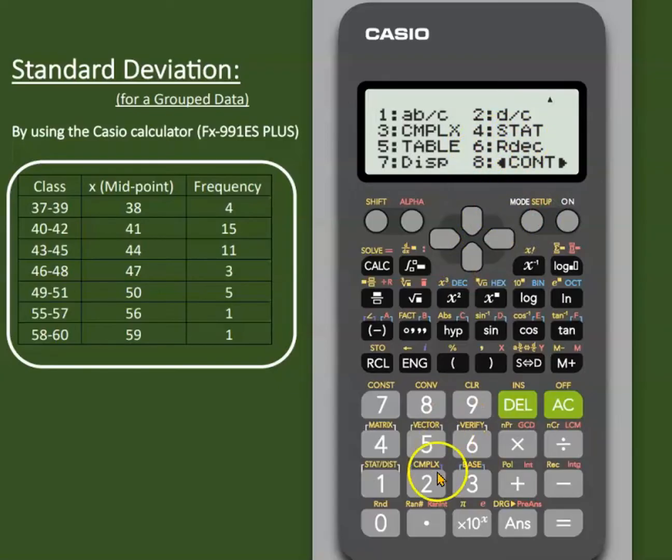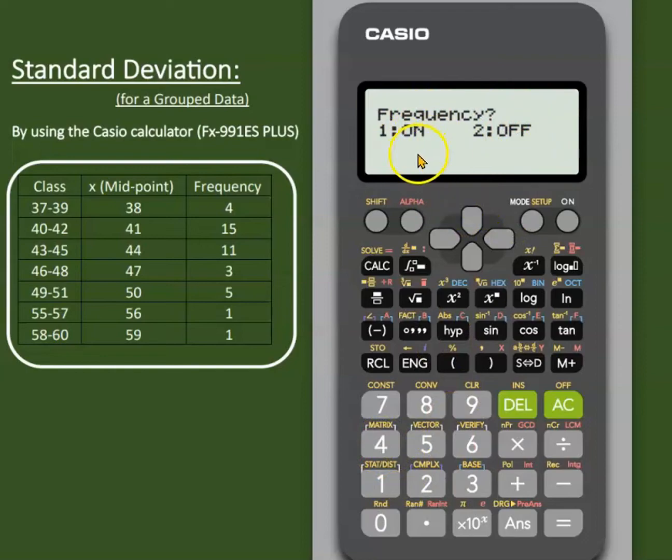Scroll down in the setup. Option 4 is for frequency. The calculator is asking the user if the frequency is required. Yes, we need frequencies, which comes under option 1.